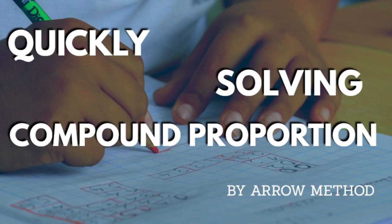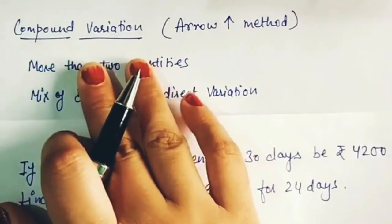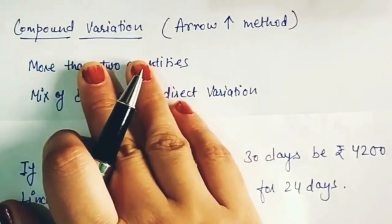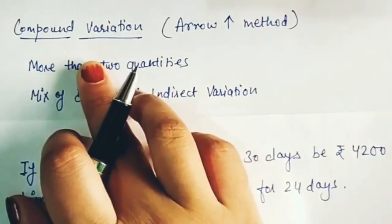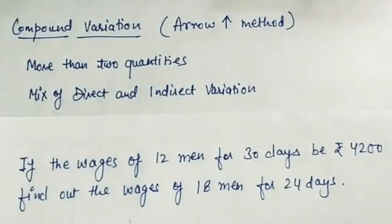Hello everyone, this is Jainu and I am going to tell you about compound variation today. So, what is compound variation? We can have more than two quantities — two quantities and more than two quantities also.